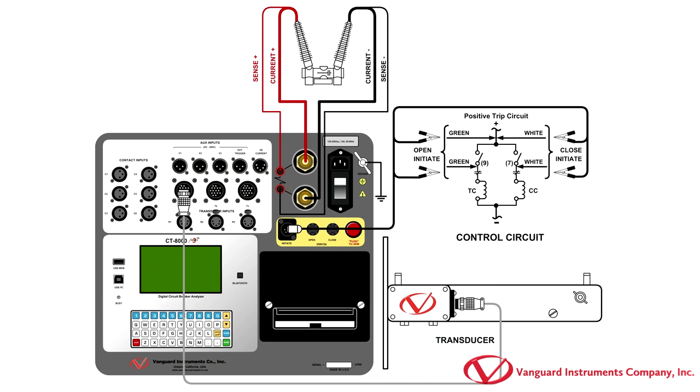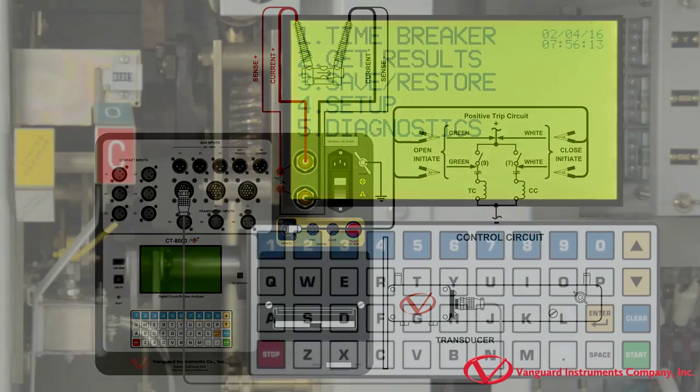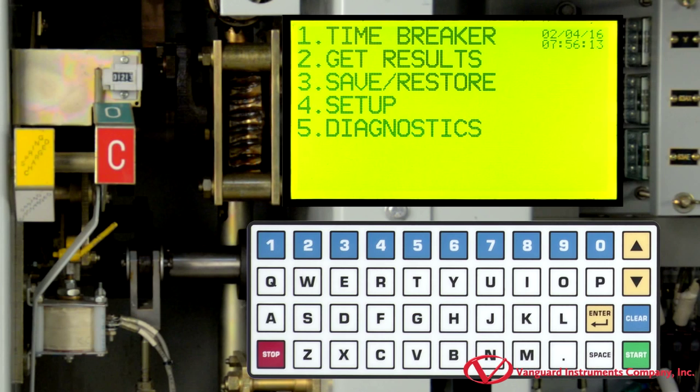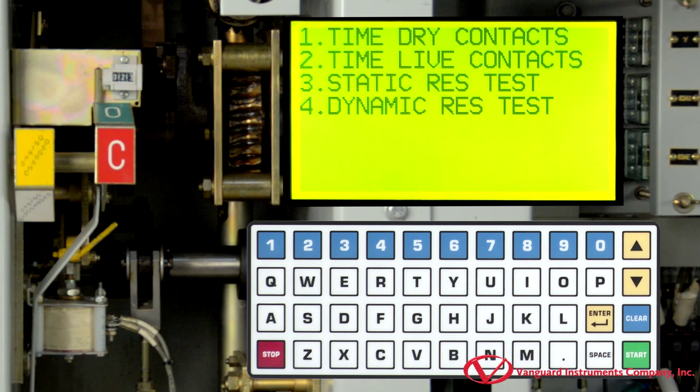Once you have made all cable connections, remove the ground cable from one side of the breaker. To start performing a dynamic resistance test, select the time breaker option from the main menu by pressing the 1 key. Now, press the 4 key to select the dynamic resistance test.